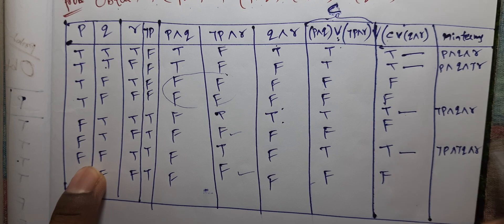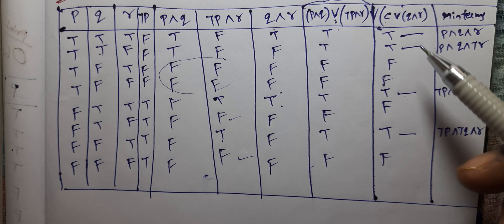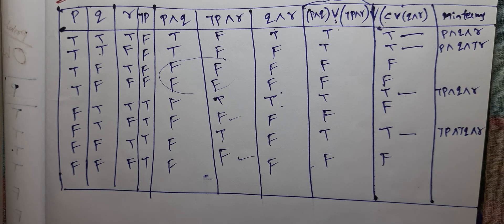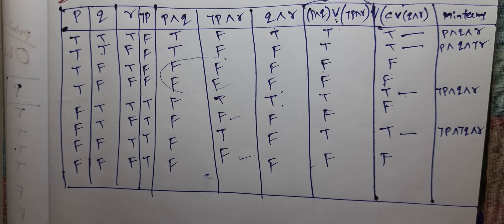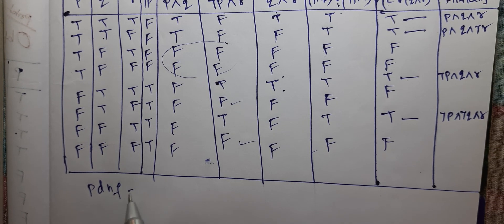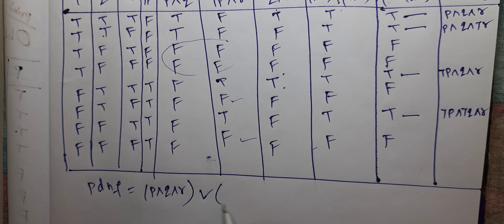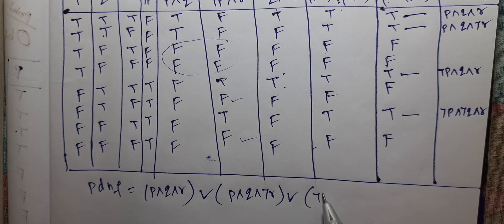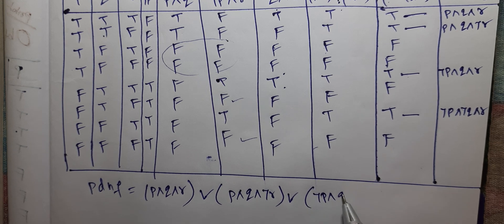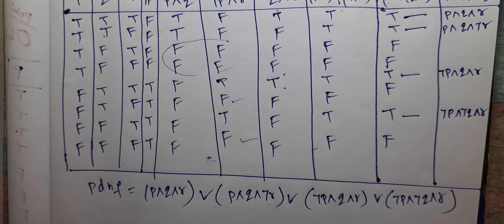PDNF equals (P and Q and R) or (P and Q and negation R) or (negation P and Q and R) or (negation P and negation Q and R).